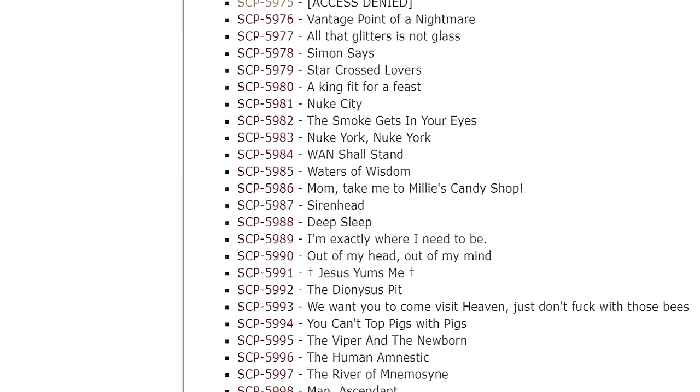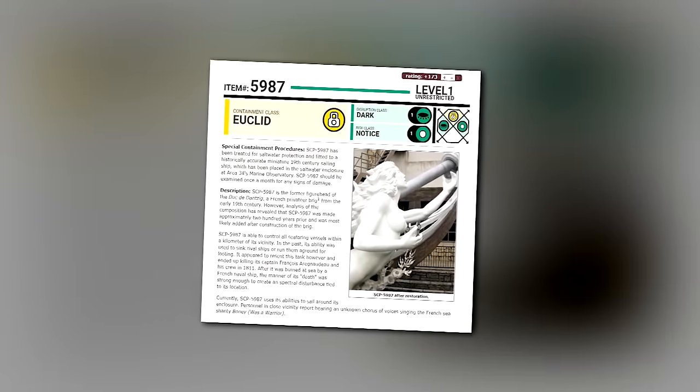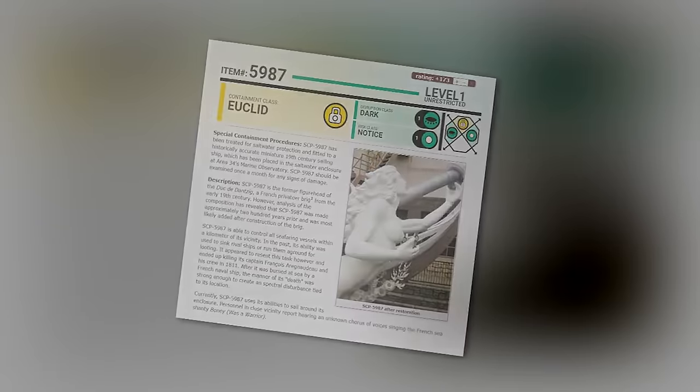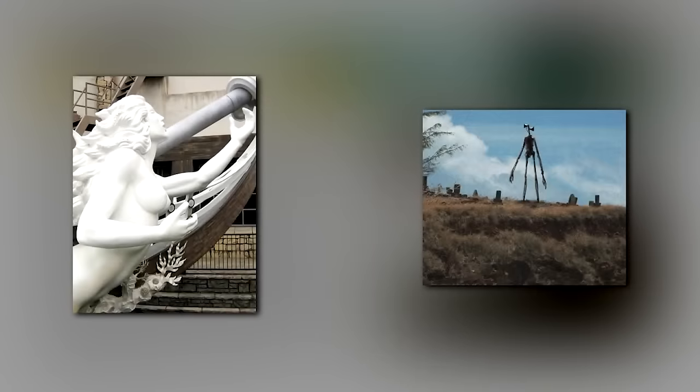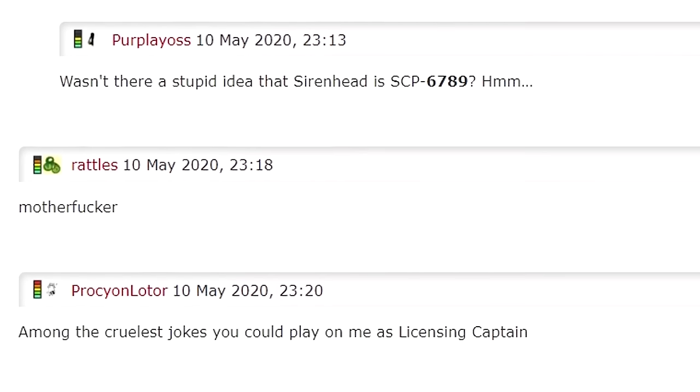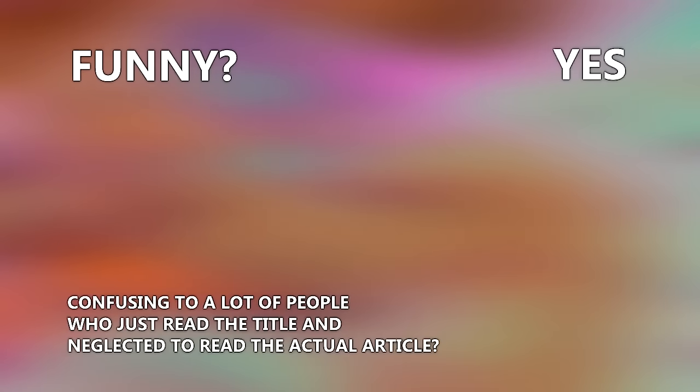You may also notice that SCP-5987 is titled Siren Head. What's the deal with that? Well, the author wrote a story about a ship's figurehead that could control other ships with a siren-like song. Figurehead that's also a siren - Siren Head, you see where this is going. The author named it Siren Head as a meme/joke about the controversy of Siren Head being mistaken for an SCP. Funny? Yes. Confusing to a lot of people who just read the title and neglected to read the actual article? Also yes.